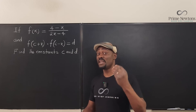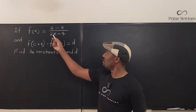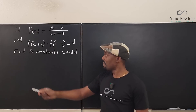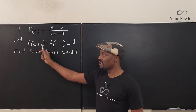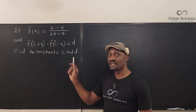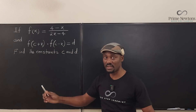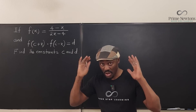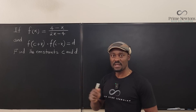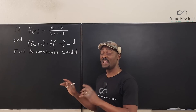The problem says: if you're given f(x) defined as (4 minus x) over (2x minus 4), and you also know that f(c plus x) multiplied by f(c minus x) equals a constant d, where c is also a constant — so c and d are not changing — find the constants c and d.